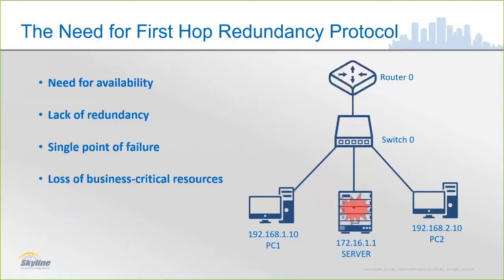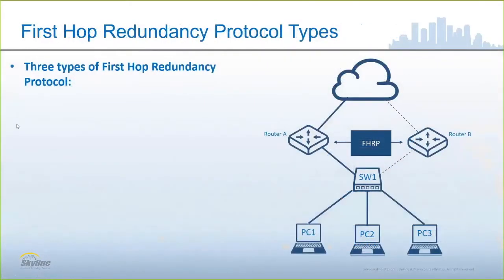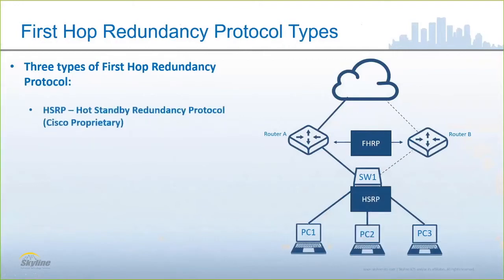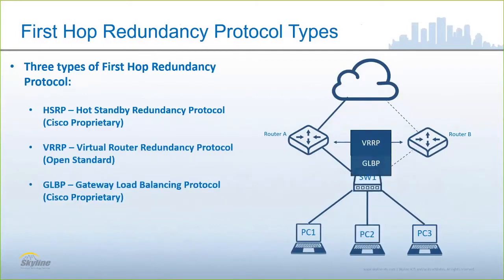Because that's what we don't like — loss of business and loss of critical resources. There are three primary types of redundancy protocols that we talk about. We talk about Hot Standby Redundancy Protocol, which is a Cisco proprietary protocol; Virtual Router Redundancy Protocol, which is an industry open standard; and the third one is Gateway Load Balancing Protocol.